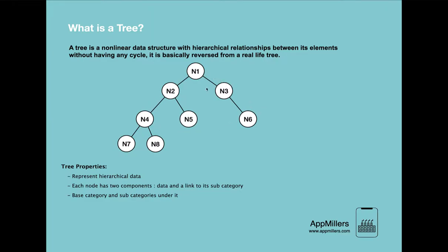In computer science, a tree data structure looks like this. Let's verify that the properties fit. This tree has a root of n1, with subsequent nodes below it. Examining the tree closely, the data is represented in hierarchical order: n1 is at the top, n2 and n3 are subnodes under it, and going one step further we have n4, n5, and n6 — so the first property is satisfied.